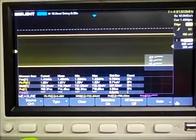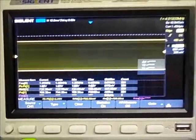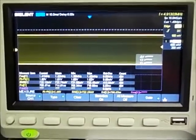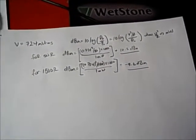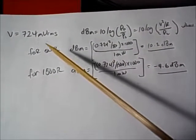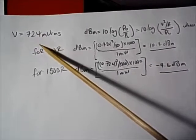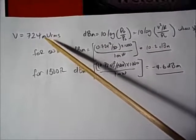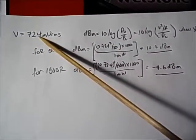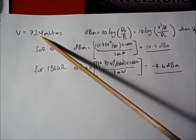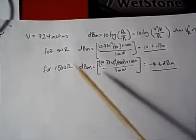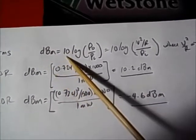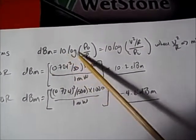It's roughly about 723 millivolts RMS. Let's use that and calculate what the dBm is going to be into 50 ohms and into 1500 ohms. One note — I did this calculation prior to filming and I used 724 millivolts RMS. On the scope we're seeing roughly 723, but it's close enough and we're going to get some meaningful values.